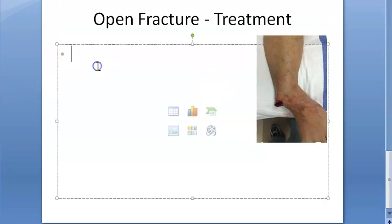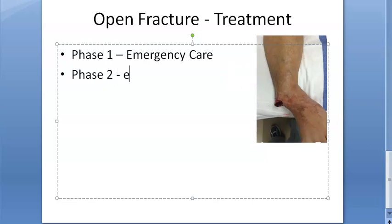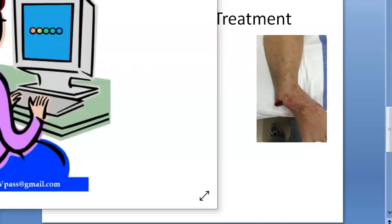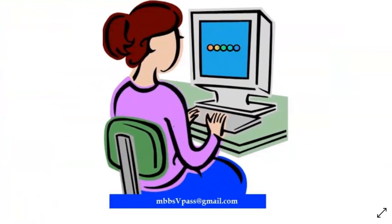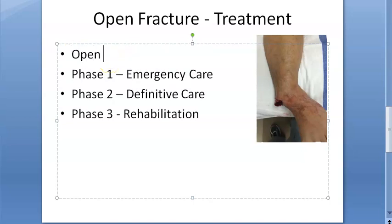Now let's look at the treatment for open fracture. You have three phases: phase one is emergency care, phase two is definitive care, and phase three is rehabilitation. The whole intention of treatment is to convert this open fracture into a closed fracture, because you are scared of infection.